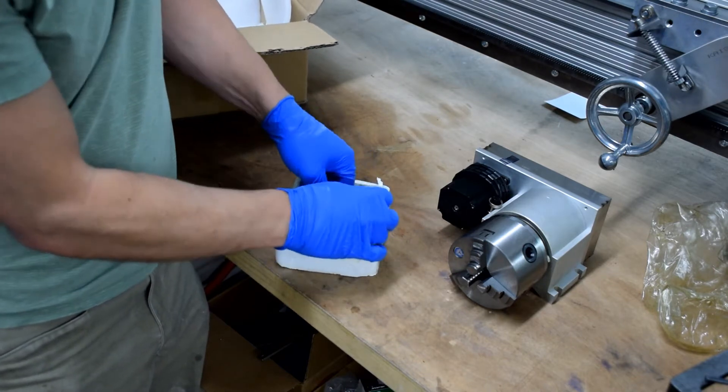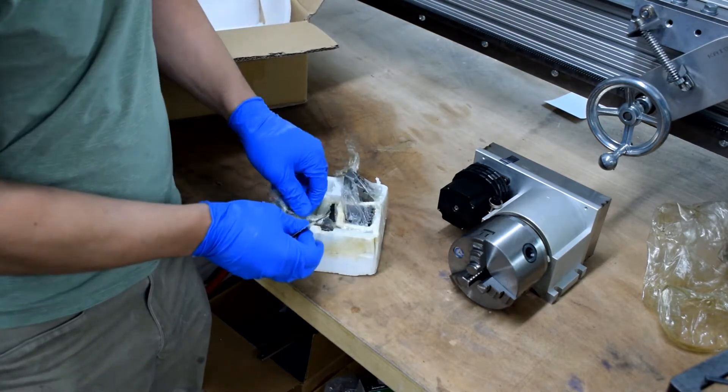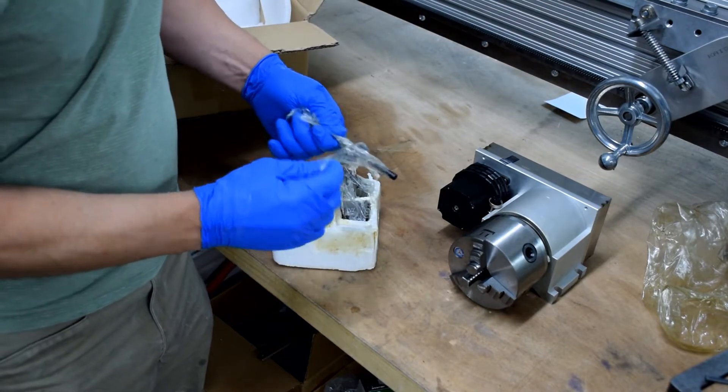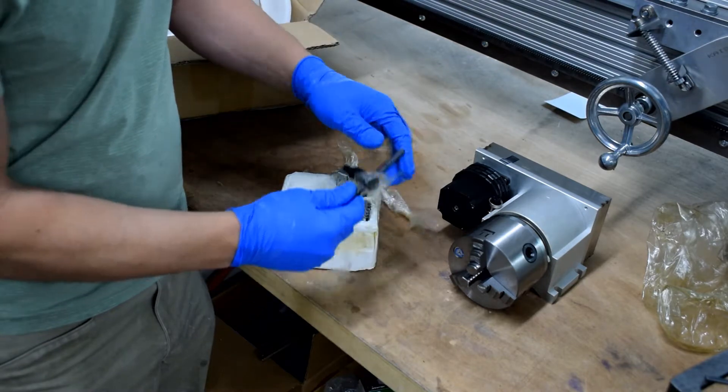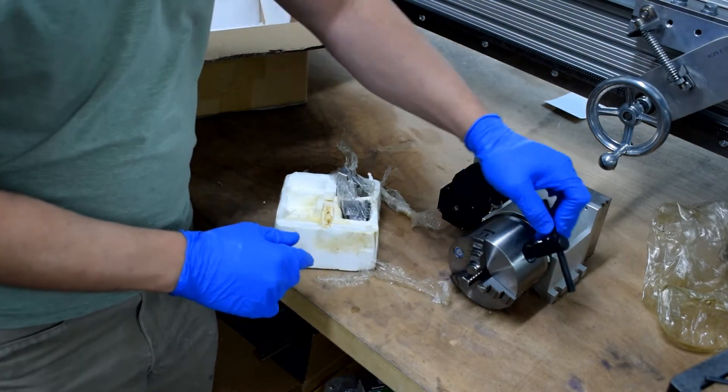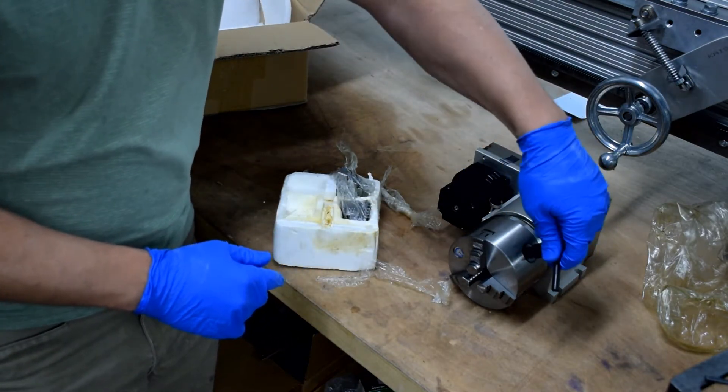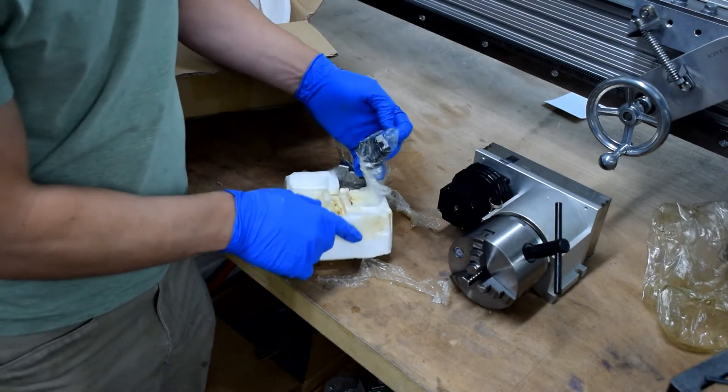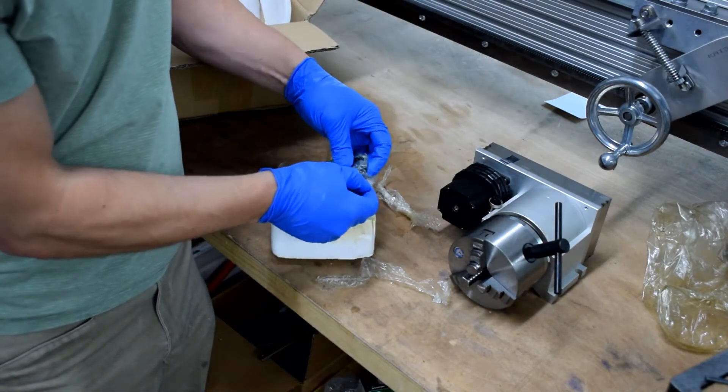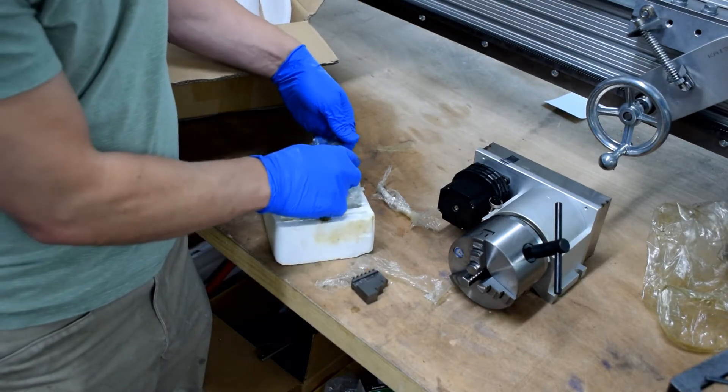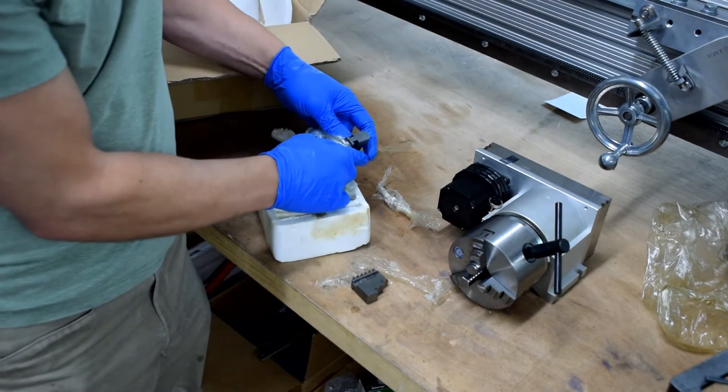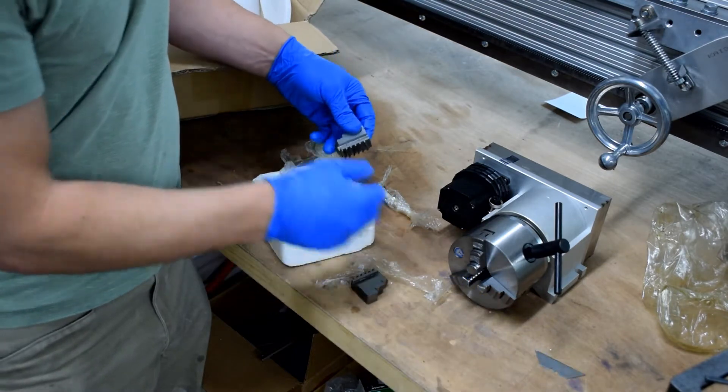I'm just opening this up here. It comes with a chuck key and also some outside jaws. What we're going to do is disassemble the chuck, clean it, put it back together, and then change the gearing in the back and redo a little bit of the electrical wiring.